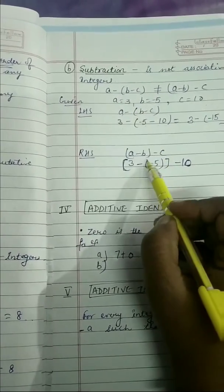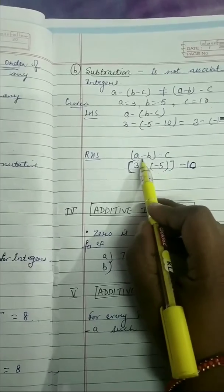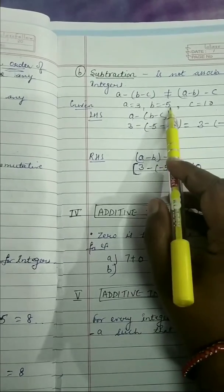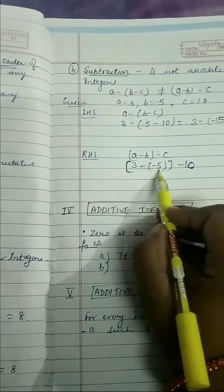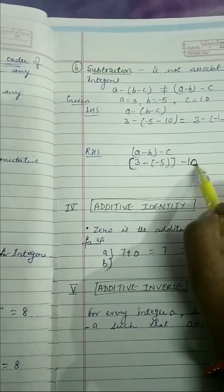Value of A is 3. B is minus 5, so you have to put it like this: (3 minus minus 5) minus 10.